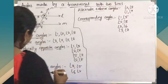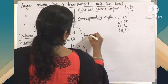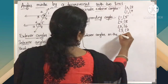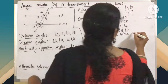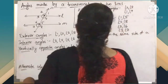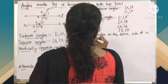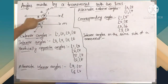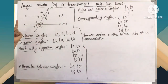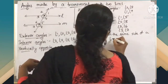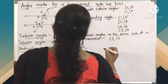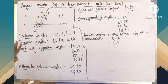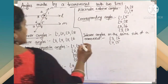Next, interior angles on the same side of a transversal. The interior angles are 3, 4, 5, and 6, and they should be on the same side. So angle 3 and angle 6 is one pair, and angle 4 and angle 5 is another pair. Totally you get 2 pairs of interior angles on the same side of the transversal.